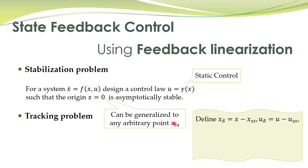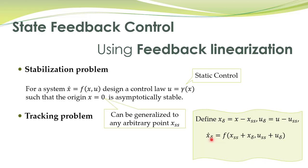The stabilization at an arbitrary point can be transformed into the stabilization problem at the origin. We define a new state variable X_Delta equal to the actual state variable minus the point at which we want to stabilize the system. Likewise, we define a new control input U_Delta, and in these new state variables the system becomes a function of X_Delta and U_Delta. Stabilizing X_Delta at origin means stabilizing the original system at the desired point.